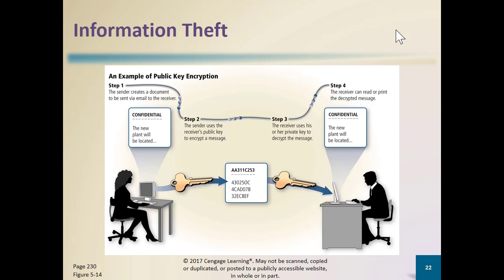Here's an example called public key encryption. The sender creates a document to be sent via email. The sender uses the receiver's public key to encrypt the message — that's a key everyone has. But the receiver uses his or her private key to decrypt the message. You need both keys: one to encrypt and another to decrypt. If those keys don't match or work together, you won't be able to read that file. The receiver can then read or print the decrypted message.